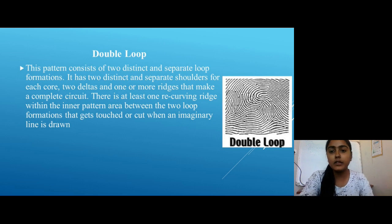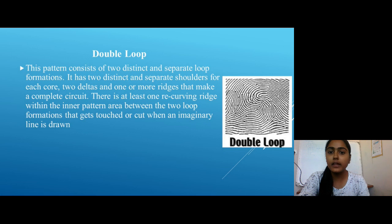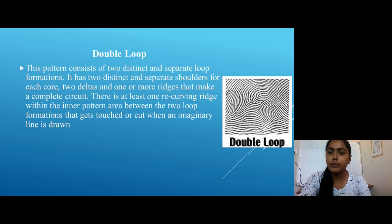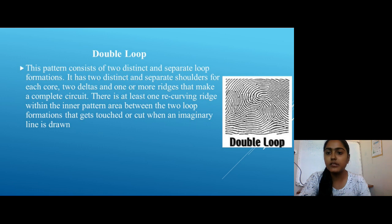The next subcategory is Double Loop. This pattern consists of two distinct and separate loop formations. It has two distinct and separate shoulders for each core, two deltas, and one or more ridges that make a complete circle. There is at least one recurring ridge within the inner pattern area between the two loop formations that gets touched or cut when an imaginary line is drawn.